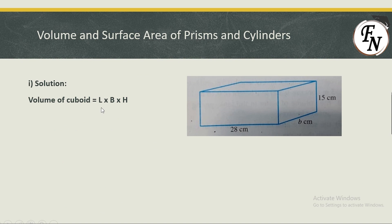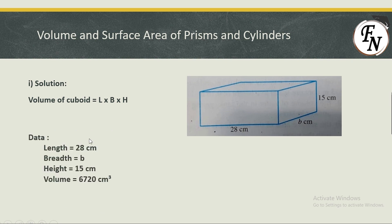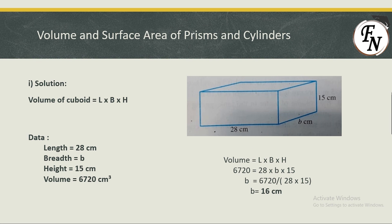The formula for volume of a cuboid is length × breadth × height. All three dimensions are present, but breadth b is missing. Substituting the known values: 6720 = 28 × b × 15, where length is 28 and height is 15 as given in the question.